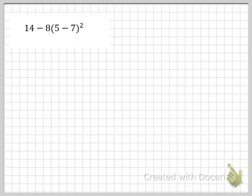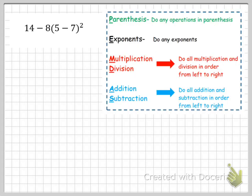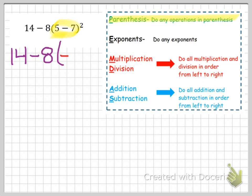Let's look at another example: 14 minus 8, and then in parentheses we have 5 minus 7, and that quantity is being squared. Our first step tells us to do anything inside of the parentheses. In this problem there's actually something to do inside the parentheses — we have to do 5 minus 7, which is negative 2. So the problem becomes 14 minus 8 times (negative 2) squared. I'm now done with parentheses and move on to exponents.